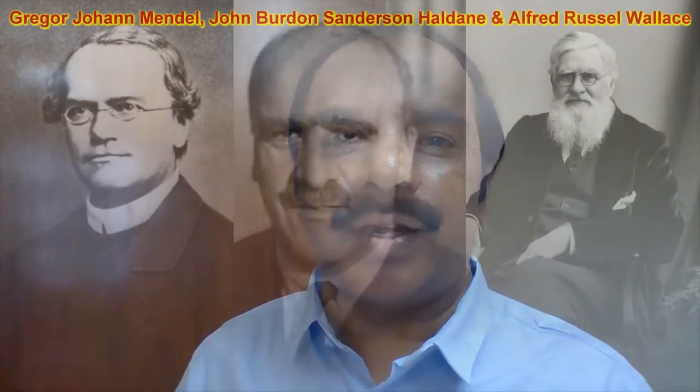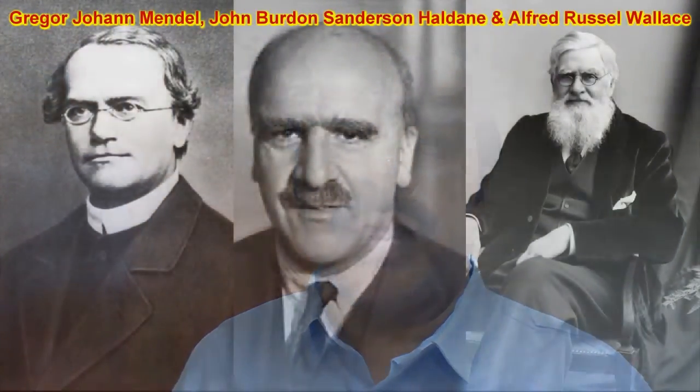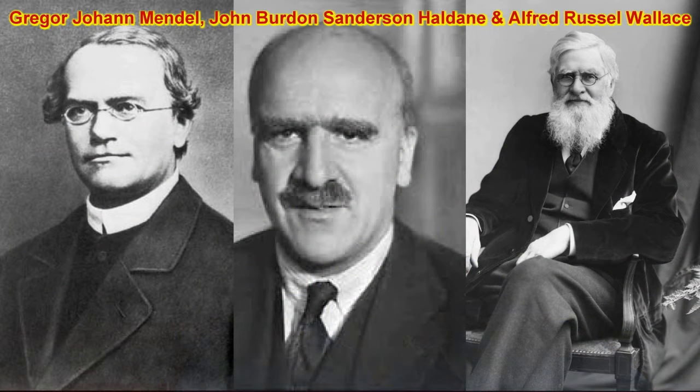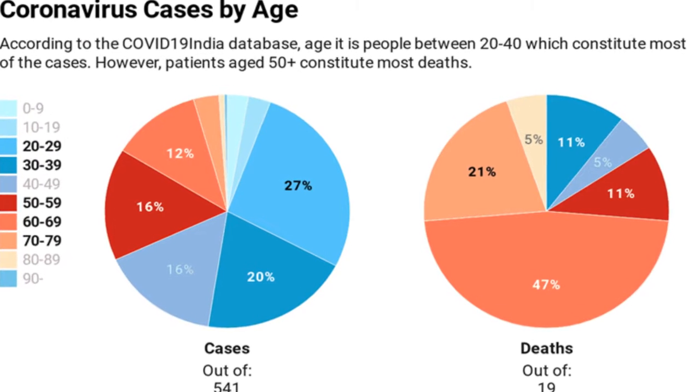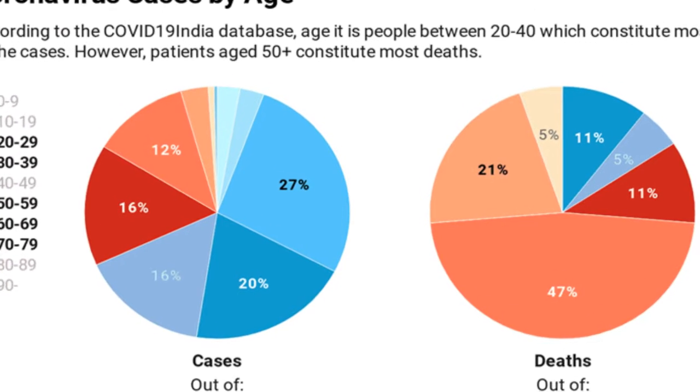The noted scientists who used statistics significantly are Gregor Mendel, J.B.S. Haldane, and Wallace. Mendel used statistics for the formulation of the principles and laws of heredity. Haldane and Wallace used it for evolutionary studies.